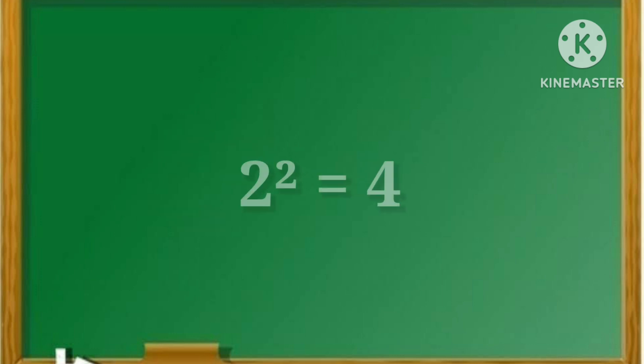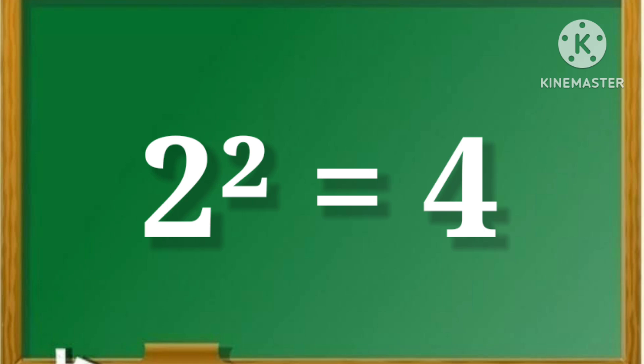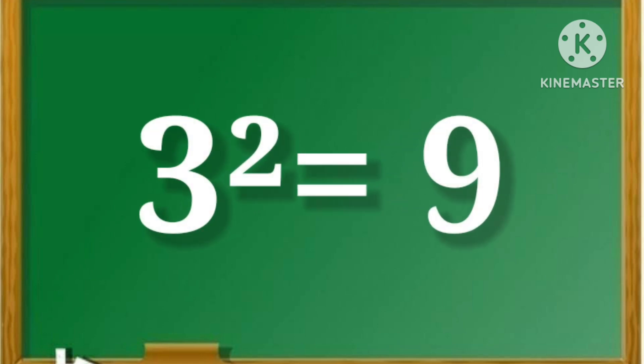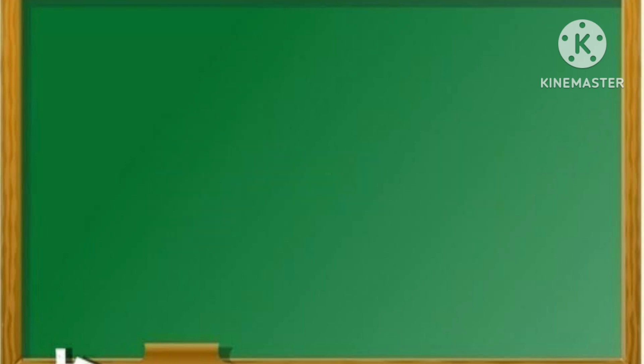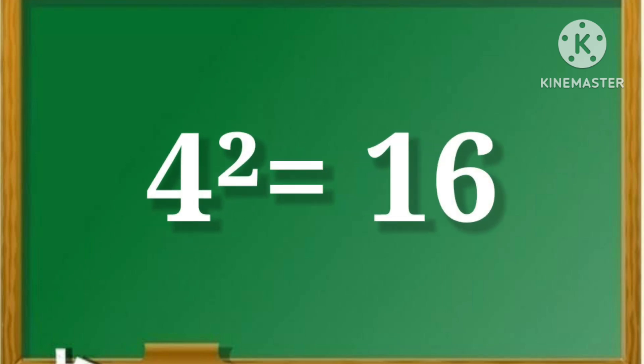2 square is equal to 4. 3 square is equal to 9. 4 square is equal to 16.